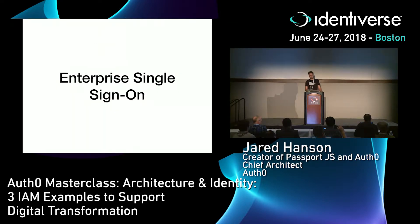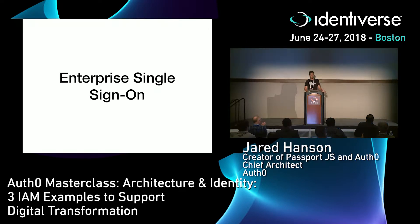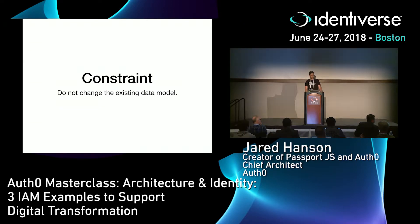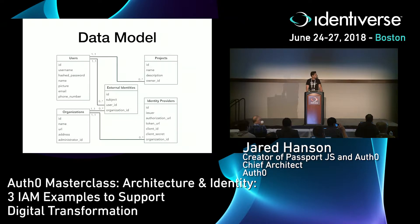Let's move on to the more interesting aspects — what actually happens when we want to solve some of these digital transformation efforts. The first is enterprise single sign-on. If we're building a project management application and want to start selling to businesses and having their employees sign on, how do we make that happen? One key constraint as we build up this application is that we don't want to overhaul it in major ways as we add new capabilities — we want to reuse what we have and avoid changing the existing data model. When we add support for enterprise SSO, the users table and projects table remain exactly the same.